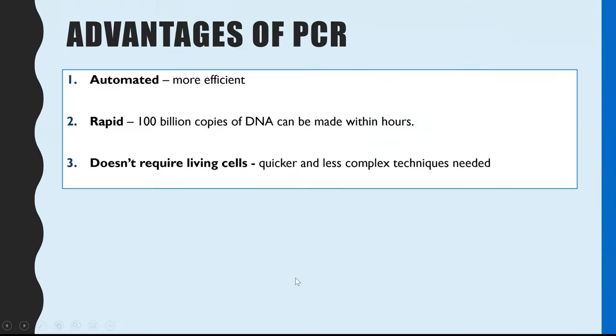So just to summarize some of those key points and link it to advantages, we said it's an automated machine that's far more efficient because you just put everything into the machine, turn it on, and then you can leave it. And very rapidly, you can get hundreds of billions of copies of the DNA fragment that you isolated. So within a number of hours, you'd go from having a small number of copies to billions of copies, just leaving this machine running.